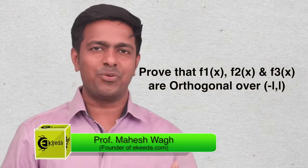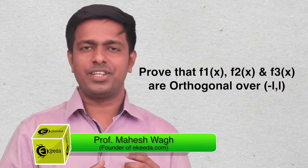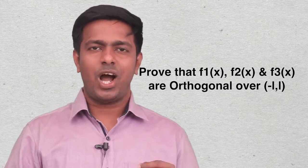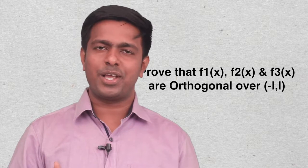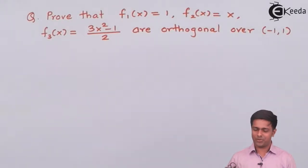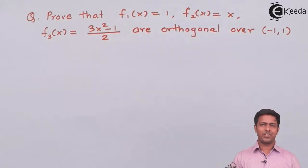Hi students. Now we are going to see one more numerical where we are going to prove that the different sets which are given are orthogonal over the given range. Here there are three functions — f1(x), f2(x) and f3(x) — and we have to prove that these three functions are orthogonal over minus 1 to 1.